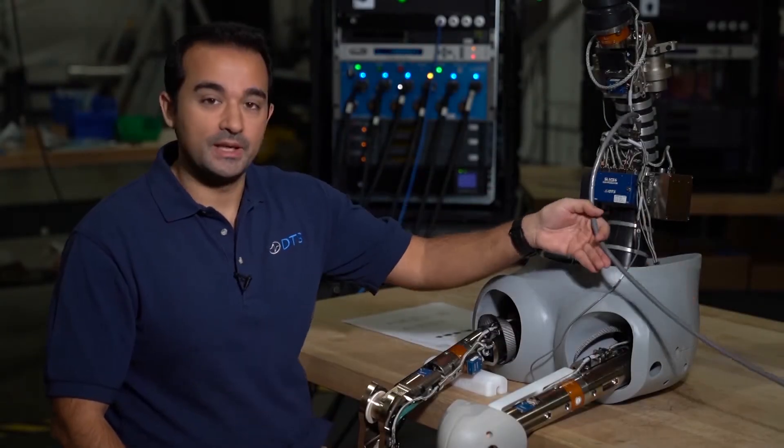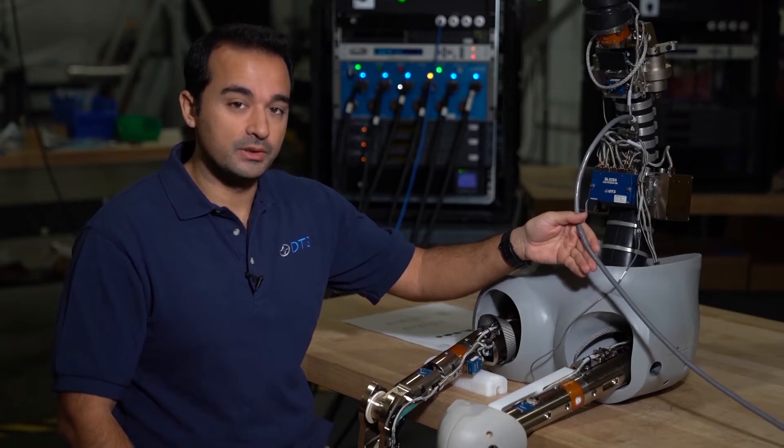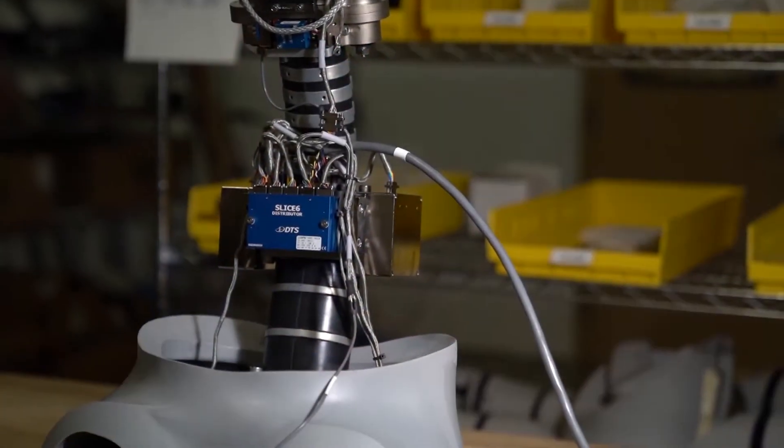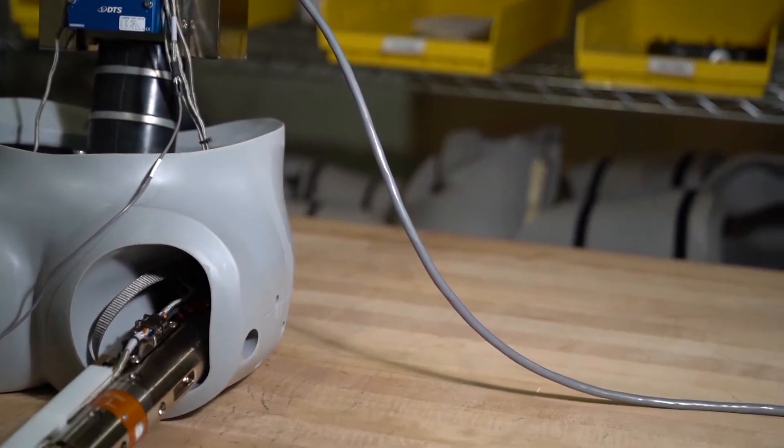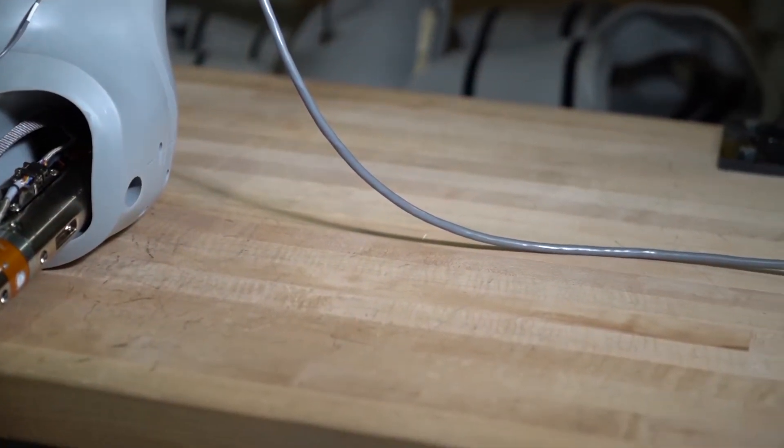This is our single ATD exit cable. It's slightly larger than the Ethernet cable, and it carries your power, Ethernet, and control signals like event and status. It makes it really easy to set up or break down a test with only a single connector to plug in for each ATD.